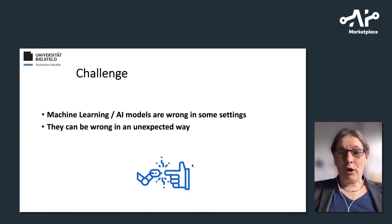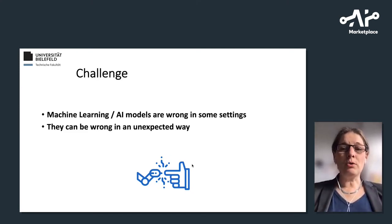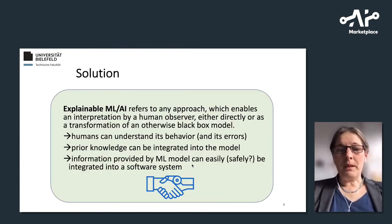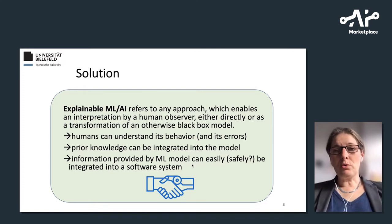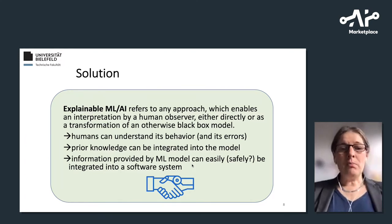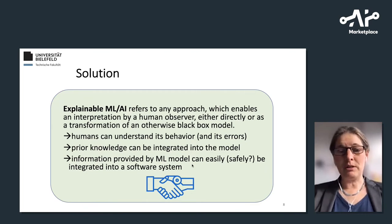Machine learning and AI models are wrong — they are always wrong for some settings. But the crucial thing is not that they are wrong, but that they are wrong in very unexpected ways, which might be opposite to what humans expect and also opposite to classical system design, where some errors are accounted for but not these ones. One solution would be to design or enrich ML or AI components such that they are interpretable, so humans should understand the behavior as well as the errors. If you have interpretable models, it might also be easier to integrate prior knowledge and to safely integrate such components into the system.